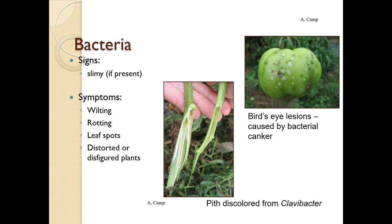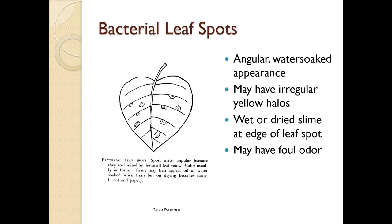Bacteria - if present they are slimy. Symptoms include wilting, rotting, leaf spots, and distorted or disfigured plants. Here we have Clavibacter pith discoloration from bacteria, and bird's eye lesions caused by bacterial canker on tomato. Bacterial leaf spots are angular and water-soaked in appearance, may have irregular orange or yellow halos, you may see wet or dried slime on the edge of the leaf spot, and they may have a foul odor.